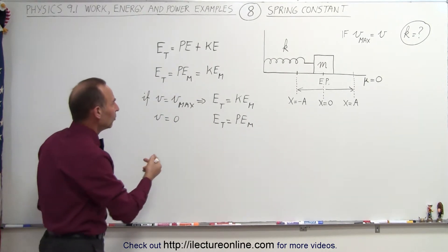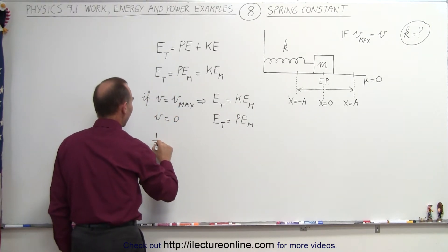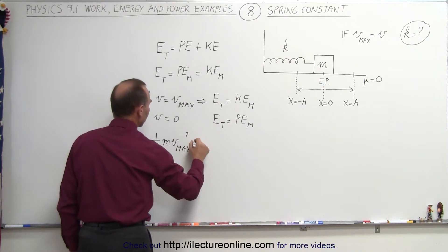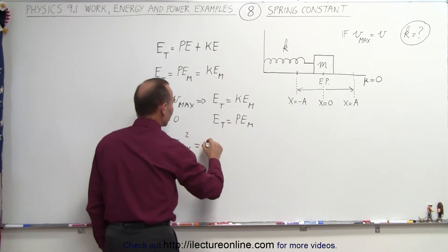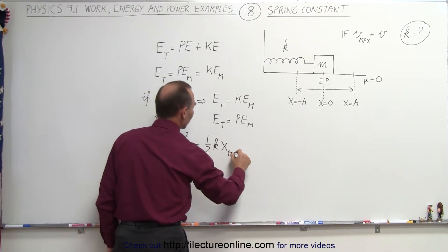So what we can do then is say that since the kinetic energy can be described as one-half m v max squared, and the potential energy can be written as one-half k x max squared,